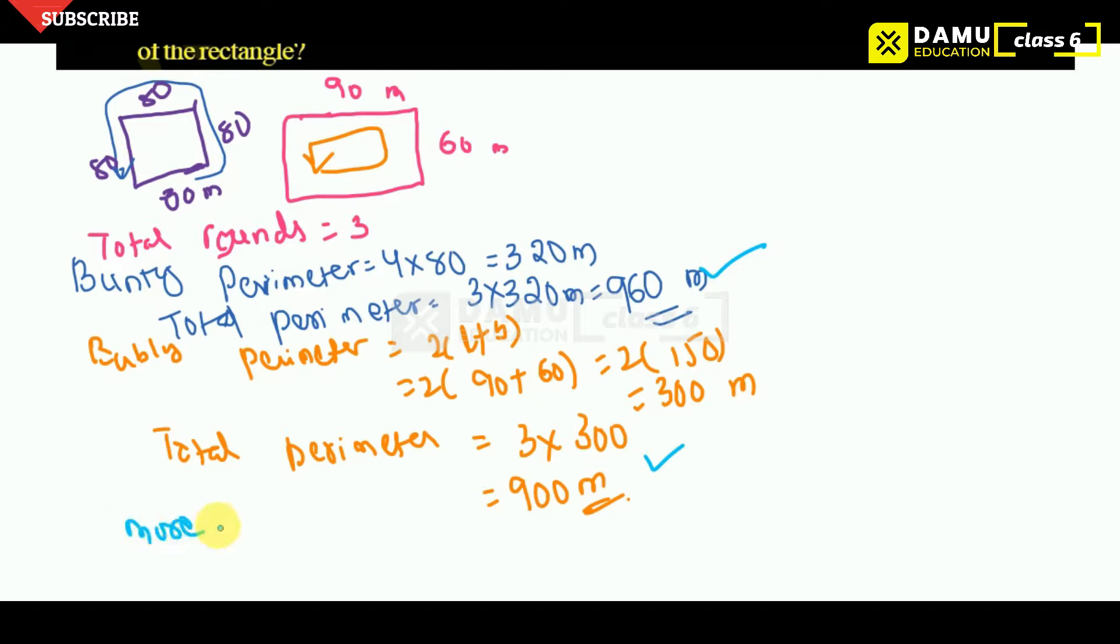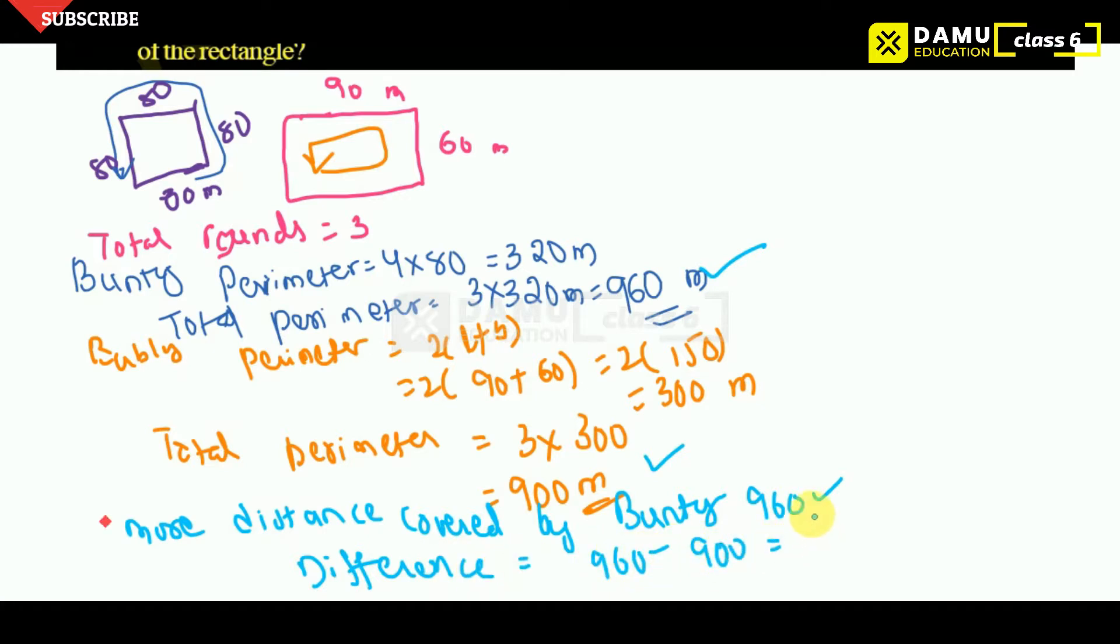More distance covered by Bunty only. Bunty that is 960 meters. By how much? So we have to take difference. We have to take difference 960 by 900. How many meters? 60 meters is more. Then question 7th one.